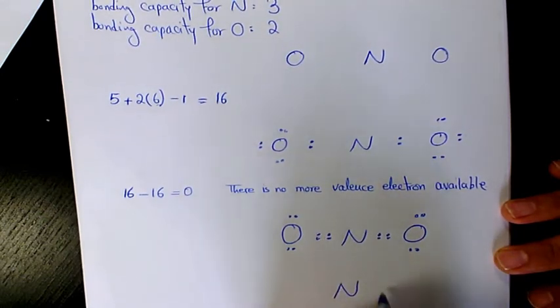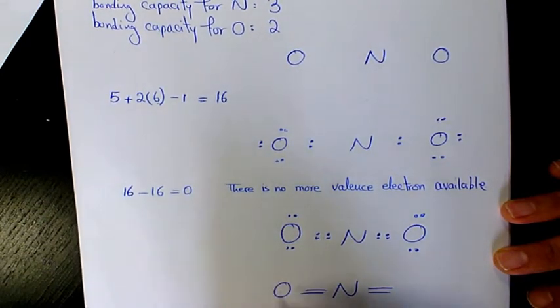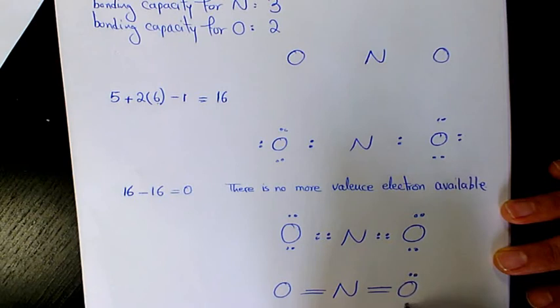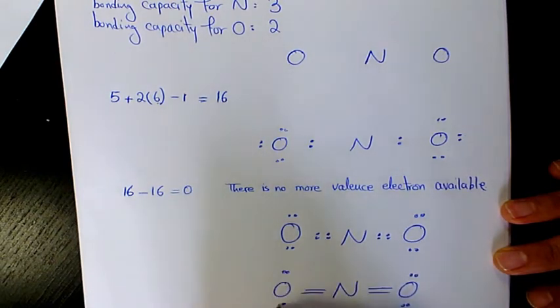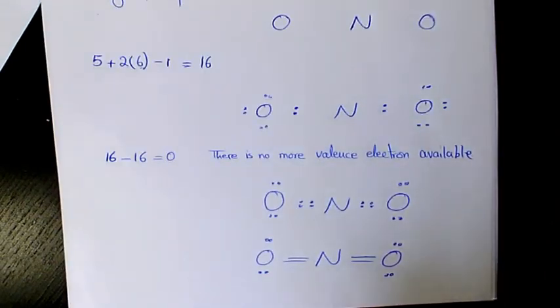So then I'm going to have double bond. It's going to be the final structure for nitronium ion.